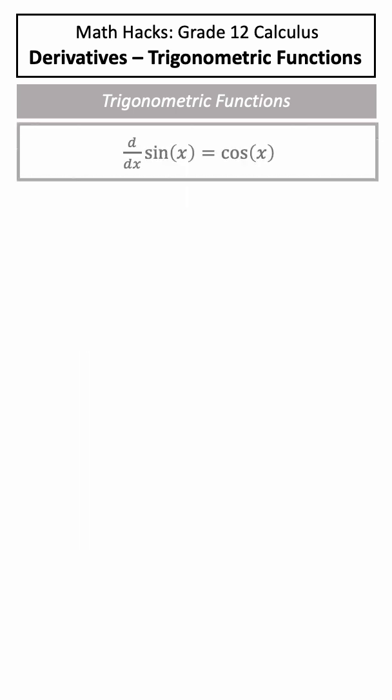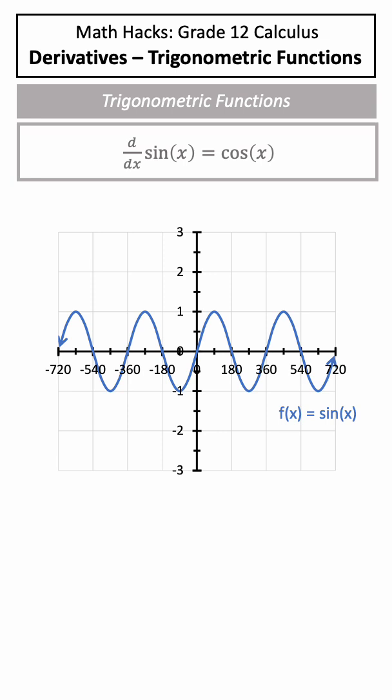Let's take a closer look at the derivative of sine of x. If we graph out the function sine of x, every maximum minimum will have a slope of 0, meaning the derivative will be equal to 0.